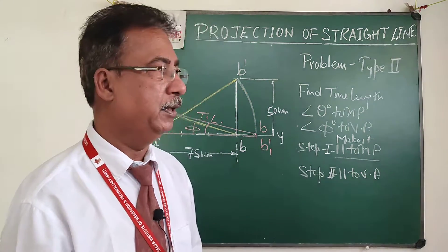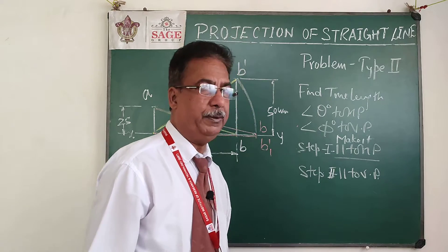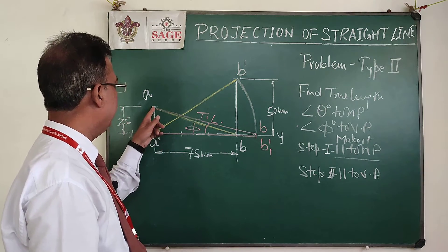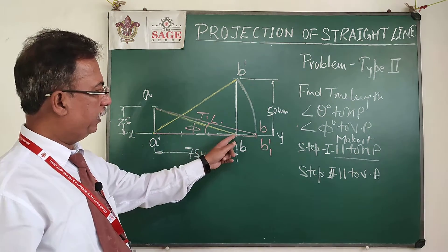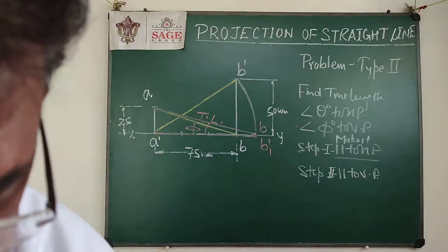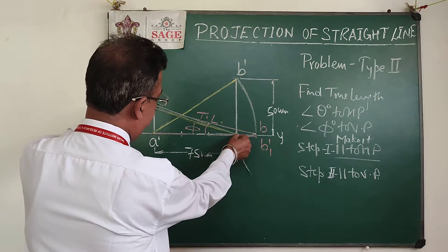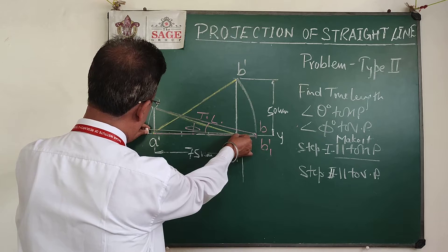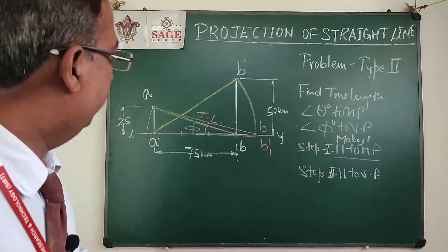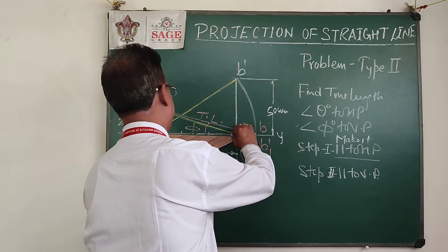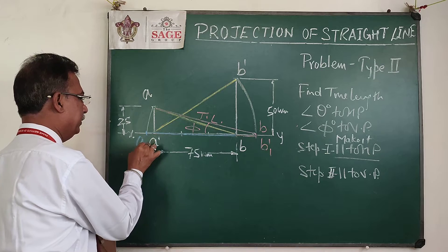Instead of making it parallel to HP, we placed it on the HP. For the next step, to make the line parallel to VP, the two options are: keep end A fixed and rotate B upside, or hold end B and rotate A downside. Since B is on the XY line, I keep end B fixed and rotate point A downside.